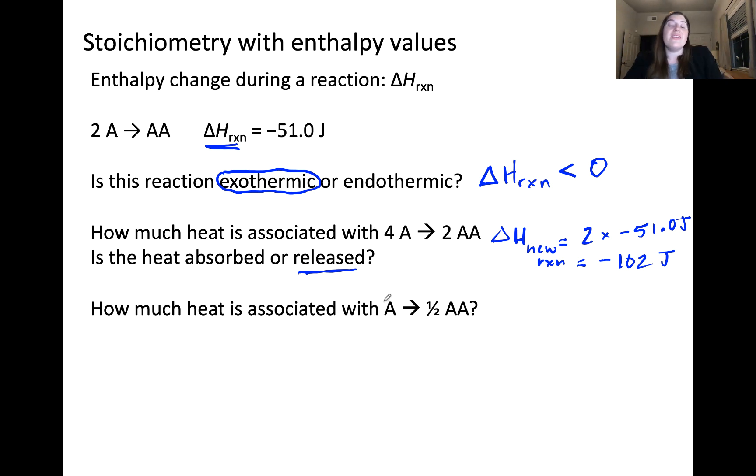Now, what if we have the same initial reaction but with half the quantities? In other words, converting 1 mole of A to half of a mole of AA. Delta H for this new reaction, we'll call it new reaction 2, is equal to half of the original enthalpy change. And this is equal to negative 25.5 joules. This should make some rational sense because if we're reacting a lower quantity of A to generate a lower quantity of AA, we would expect heat to be released but less heat to be released than in our initial case or in our new reaction shown above.